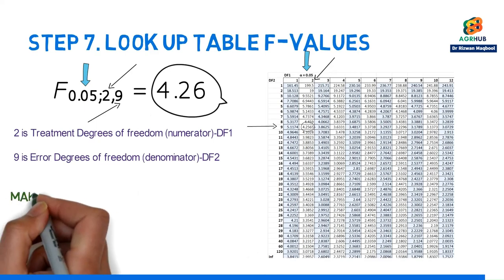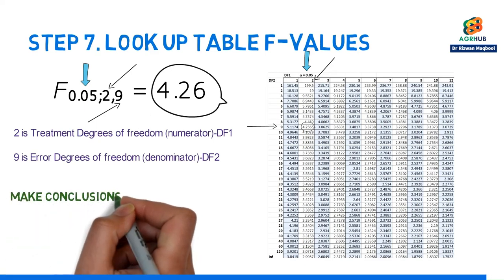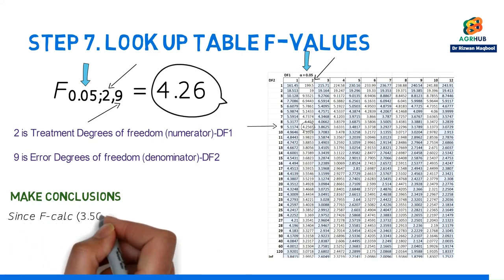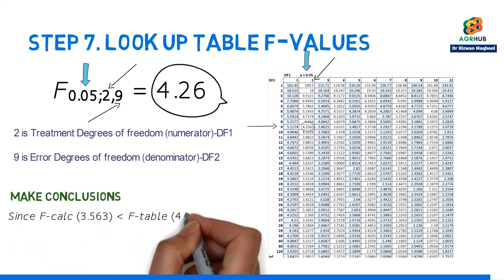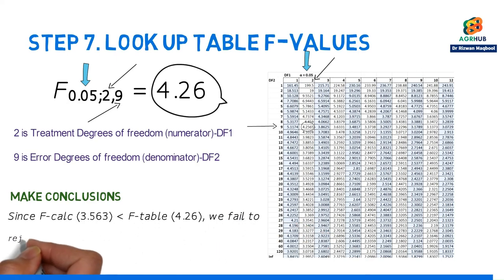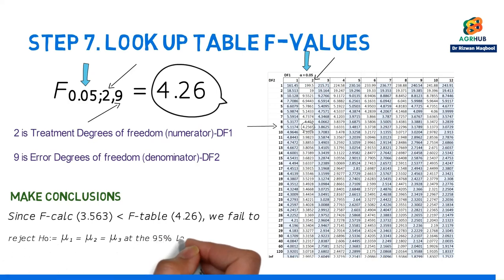When we compare that to our F test result of 3.563, we fail to reject the null hypothesis because F calculated is less than F value from the table. So now that we know all three means are equal, we can say that the sources of fertilizer are not significantly different.